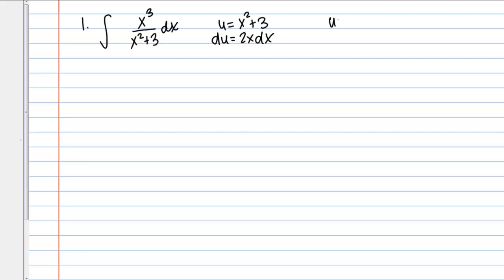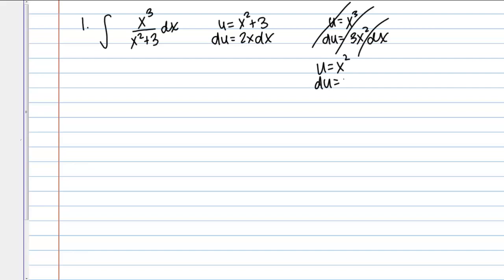Let's try something else. What if u equals x cubed? Then du would be 3x squared dx. I do have x squared in the denominator, but the du can never go in the denominator — it's always in the numerator or off to the side. So that's even worse. Maybe letting u equal x squared would be similar to letting it be x squared plus 3. We need to be a bit more clever here.